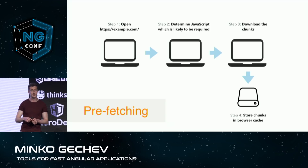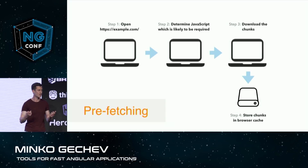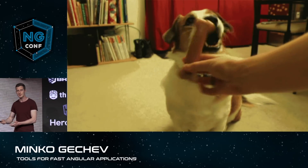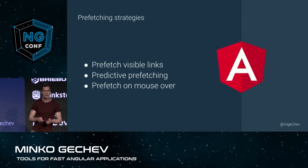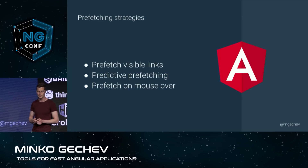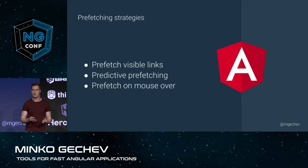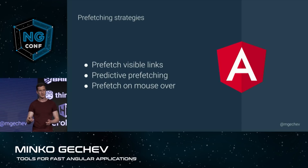We want to prefetch only what is supposed to be used next. As a developer, I usually try to guess what the user is going to do next — putting myself into the user's shoes. But there are a couple of more efficient prefetching heuristics. For example, we can prefetch only the visible links on the page, because if the user is going to navigate somewhere, it's very likely they'll click on a visible link. We can use predictive prefetching, which I'll discuss in a moment. Or we can prefetch the JavaScript associated with a specific router link on mouse-over.